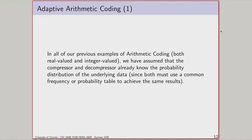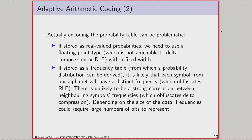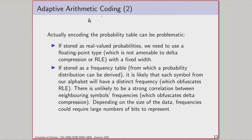We've been assuming that both compressor and decompressor somehow knew what the probability table for the symbols was. With Huffman coding, we encode the Huffman tree into the compressed bitstream before encoding begins. Similarly, we could store our frequency or probability table in the compressed bitstream. The problem is that encoding probabilities as floating point or fixed point values is ugly. We could encode them as frequencies, which is more helpful for the integer-valued arithmetic coder.